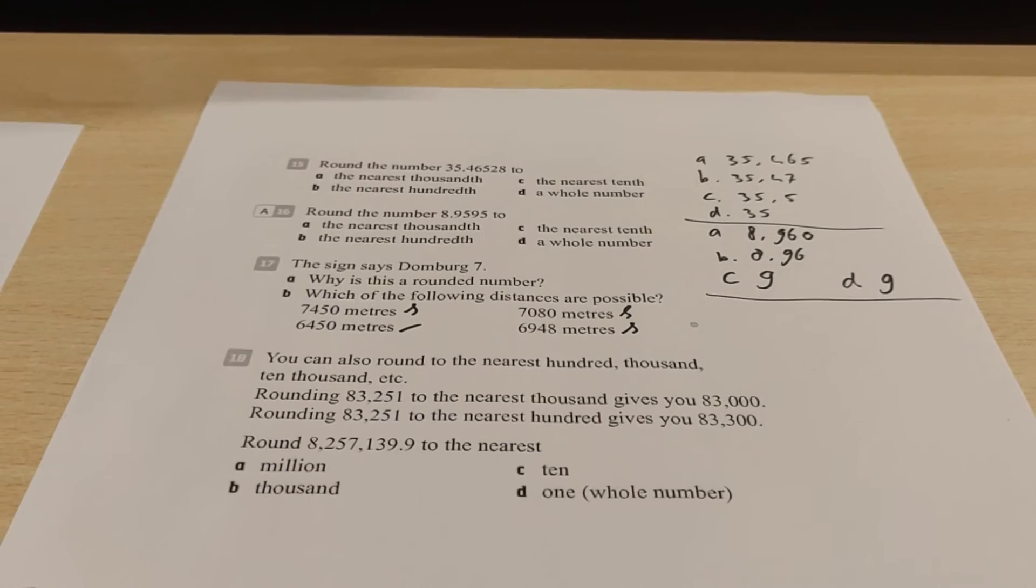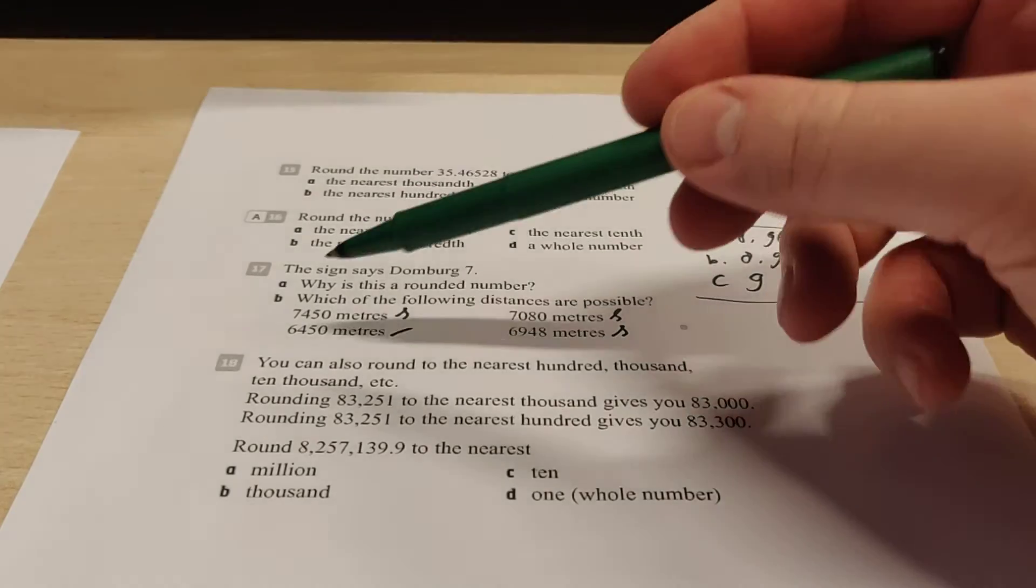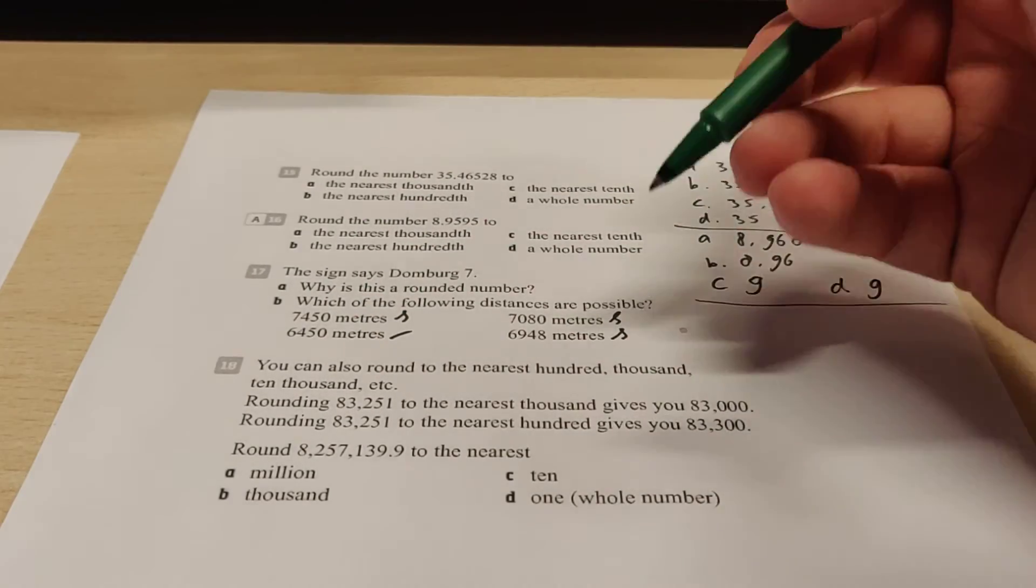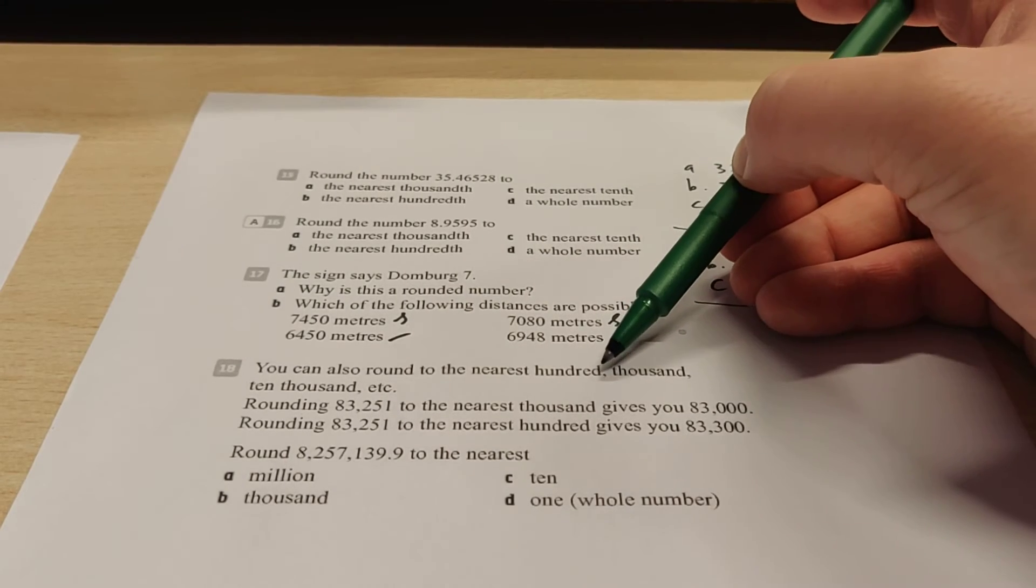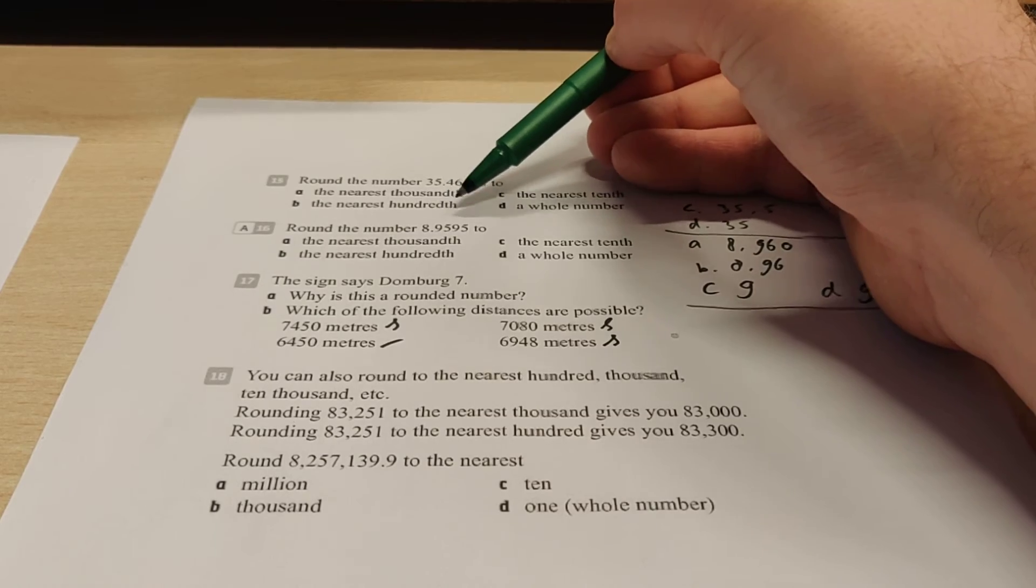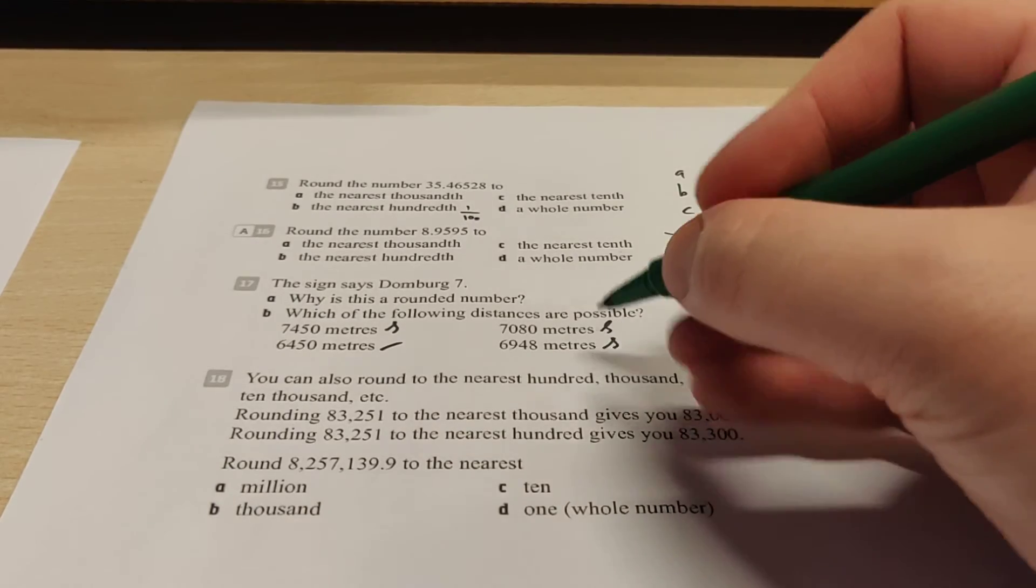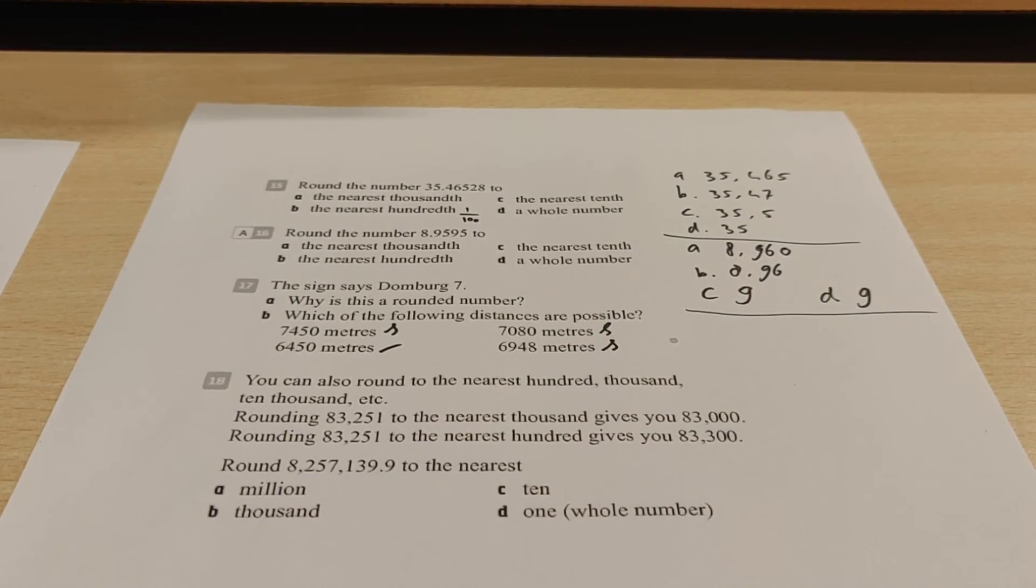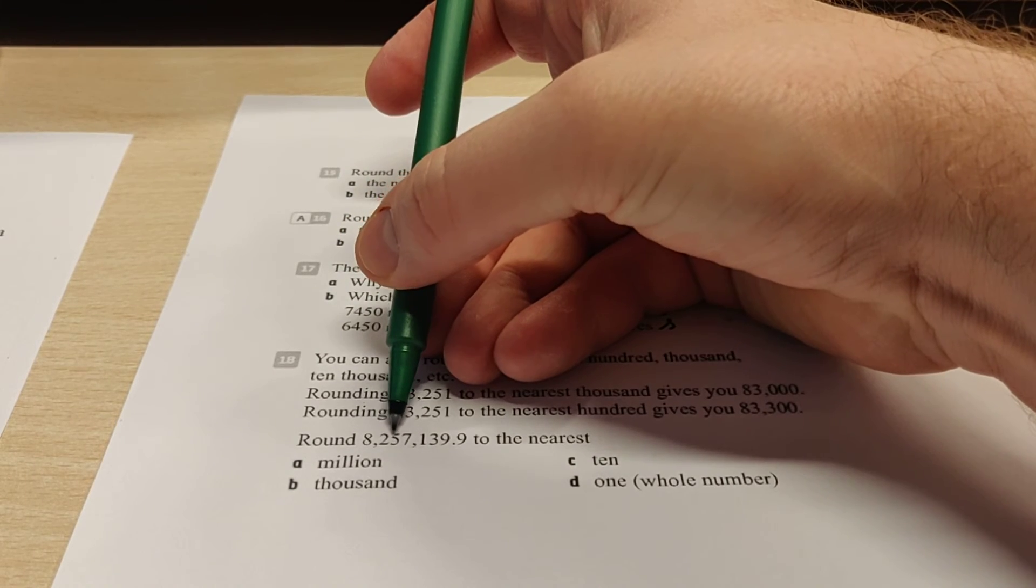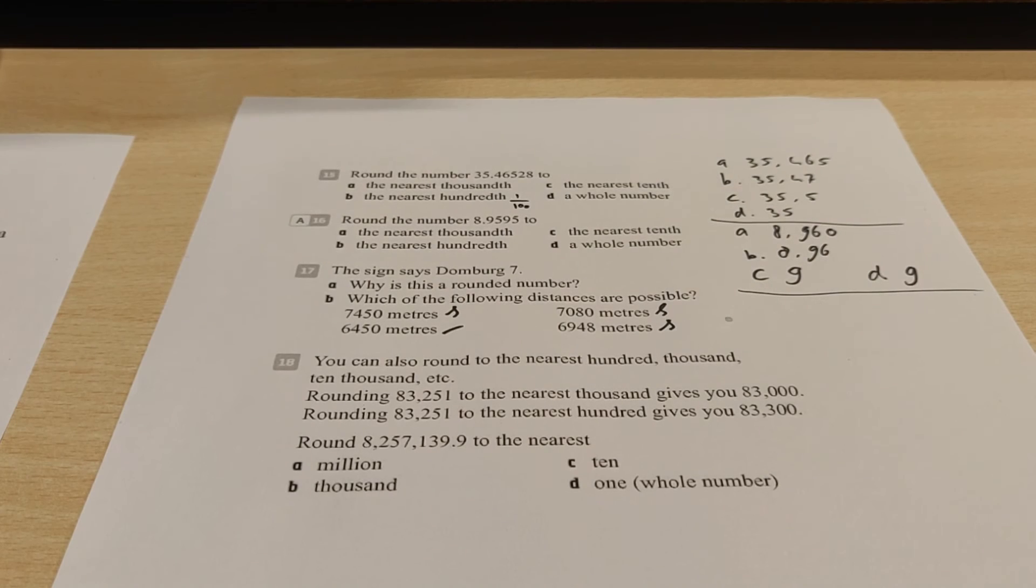Moving on to the final exercise that I want to talk about in this video is exercise 18. It says you can also round to the nearest 100,000 or 10,000. Now you see a different way in notation here. Here it just says 100 with a D. And here it says 100 with a Dth. So this means 1 out of 100, so a very small number. And this actually means just 100, so like a big number. So over here we also see a big number. We see 8,257,139.9, right?